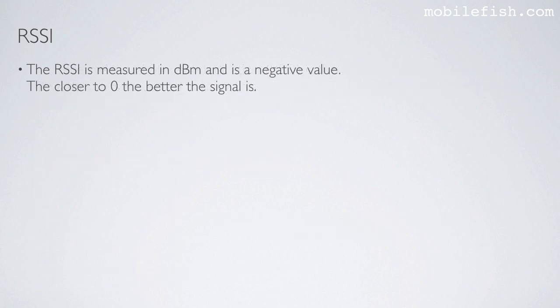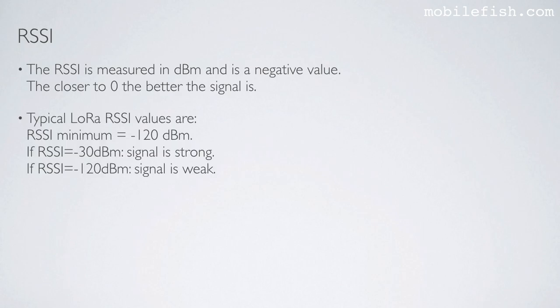The receive signal strength indication is measured in dBm and is a negative value. The closer to zero, the better the signal is. Typical LoRa RSSI values: the minimum RSSI value is minus 120 dBm. If the RSSI value is minus 30 dBm, the signal is strong. If the RSSI value is minus 120 dBm, the signal is weak.